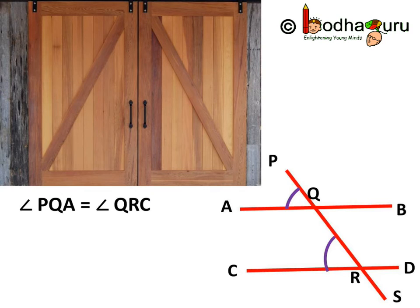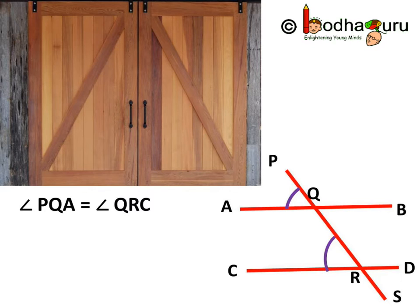And according to the axiom, we know, if a transversal intersects two parallel lines, then each pair of corresponding angles is equal. Hence, angle PQA is equal to angle QRC.